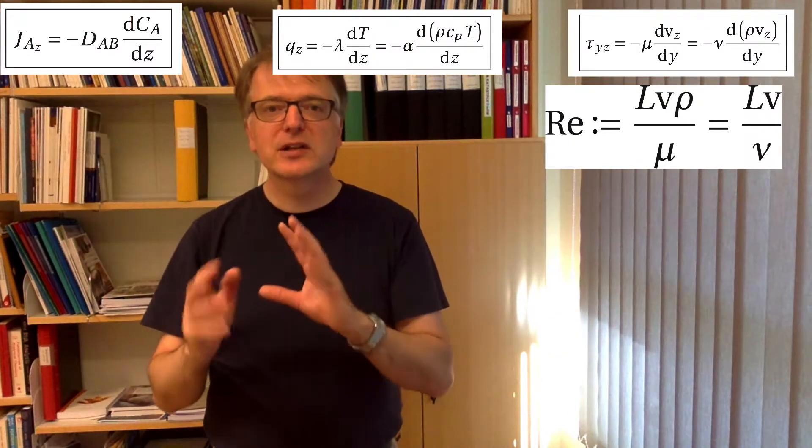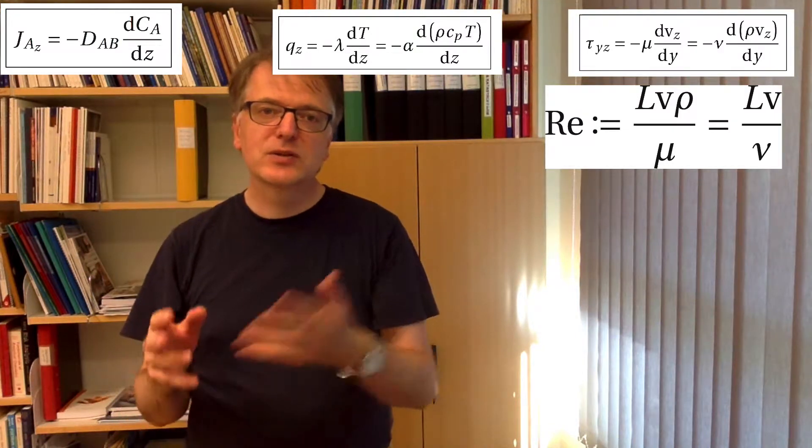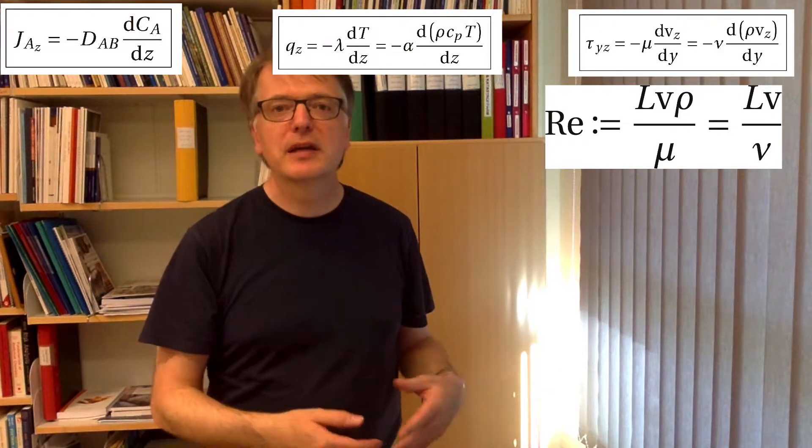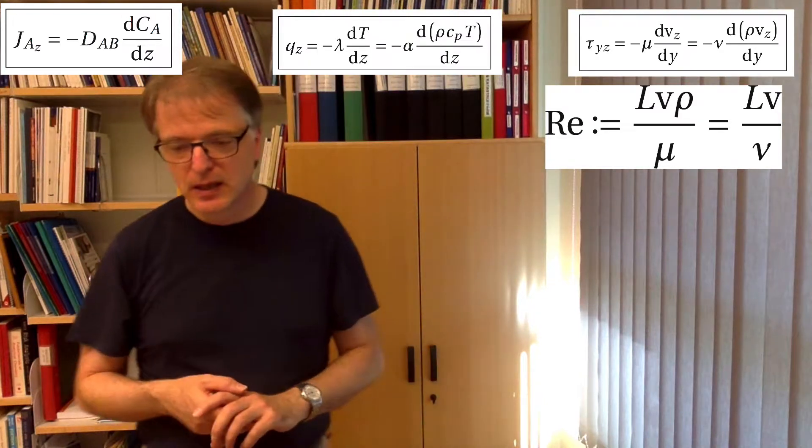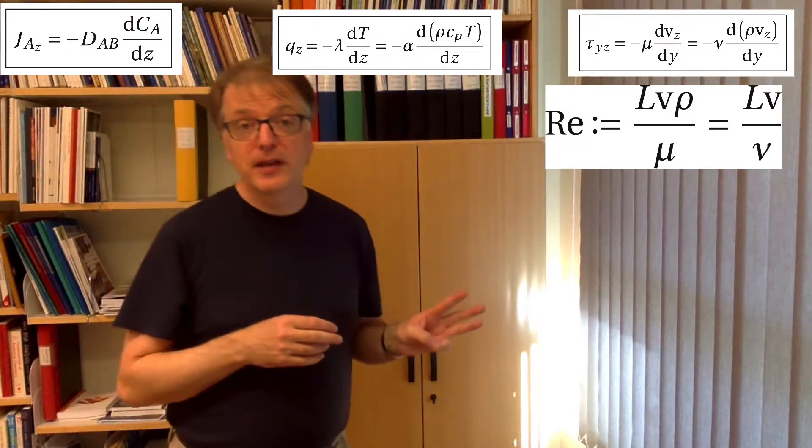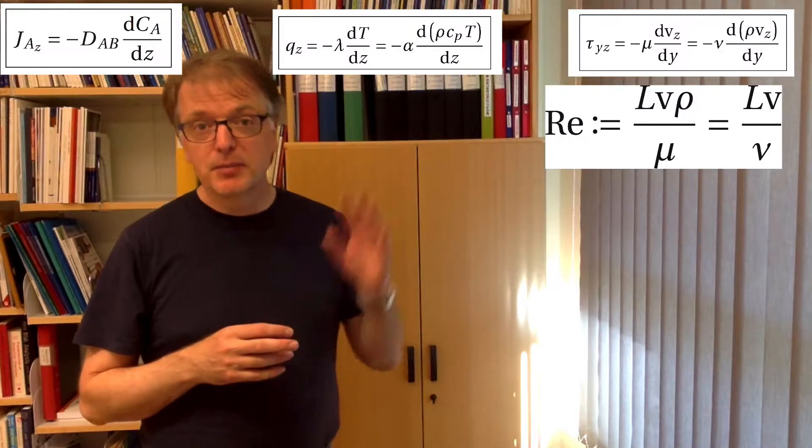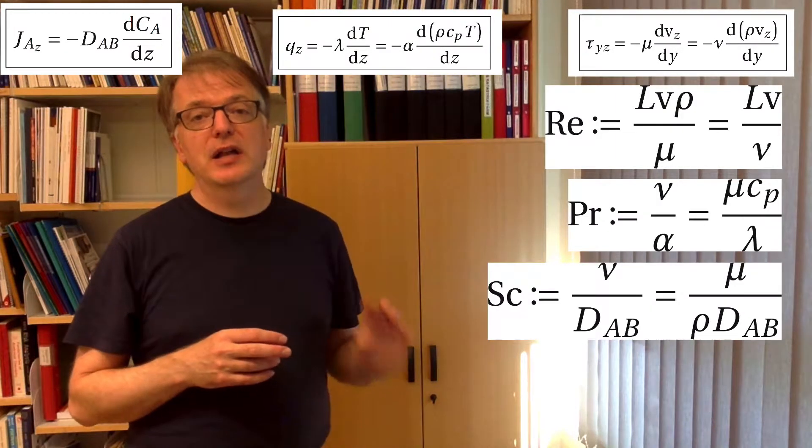This rearranging of parameters into something dimensionless makes it more general. And we will here define three different dimensionless numbers: Prandtl's number, Schmidt's number, and Lewis number.